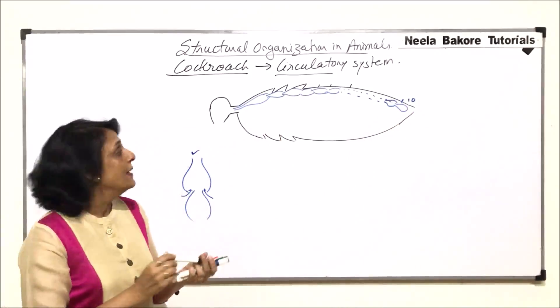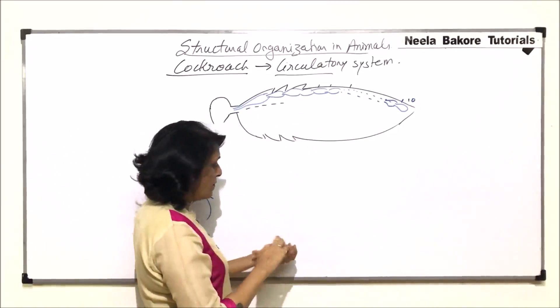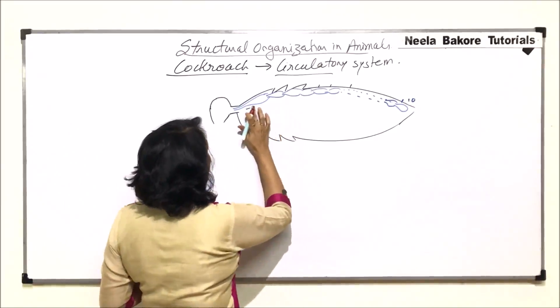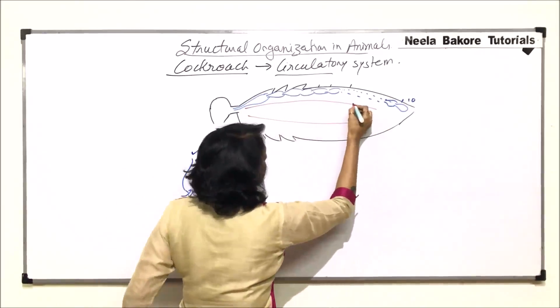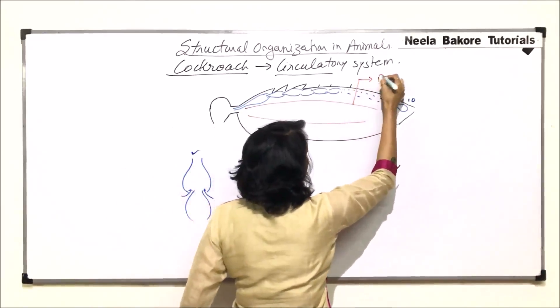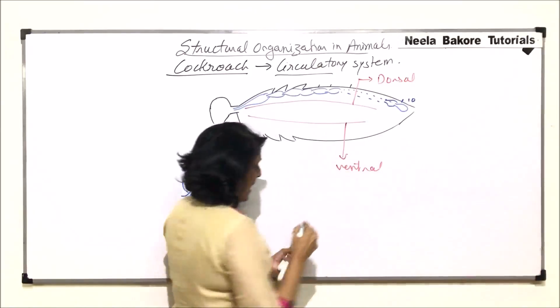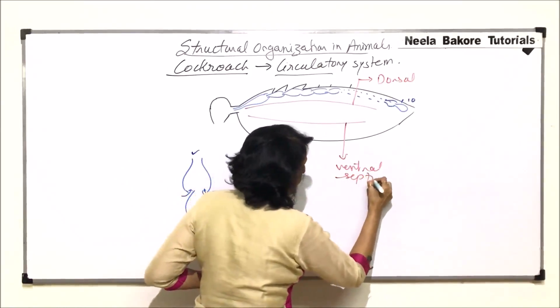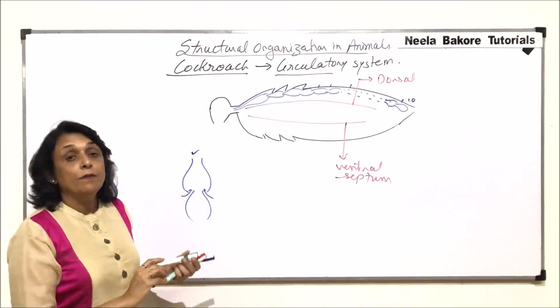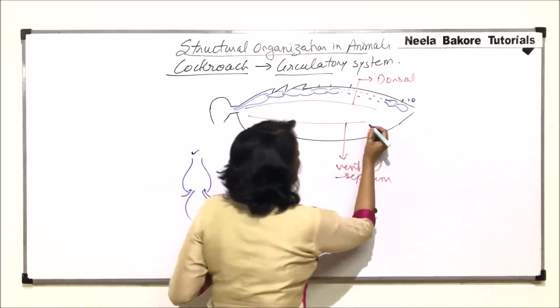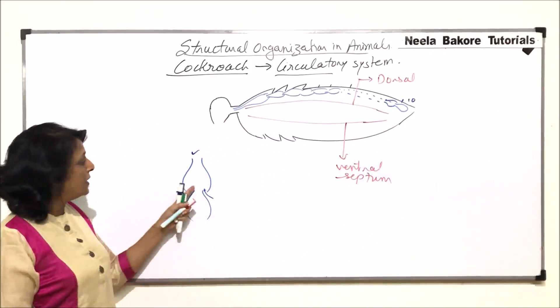We have seen that the complete body is divided into sinuses with the help of the diaphragm or septa. So I am drawing these septa, the upper one is the dorsal septa, the lower one is the ventral septa and sometimes they are also known as the diaphragms. We have also seen the alary muscles which contract so that the blood actually gets filled into these chambers.